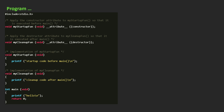This is the program through which we will understand the constructor and destructor part in C programming language. As we can see, there is a constructor defined and there is a destructor defined. Whenever our main function will be executed, first of all our constructor will be called, and in the constructor this function is defined, so this function will be executed. It will execute this printf statement and it will print 'startup code before main'.